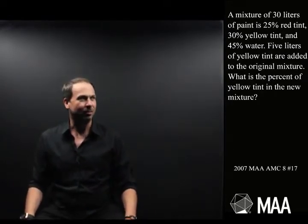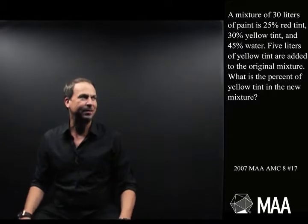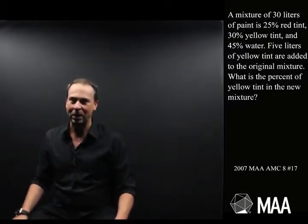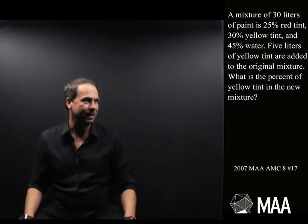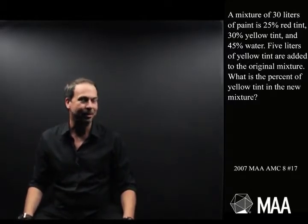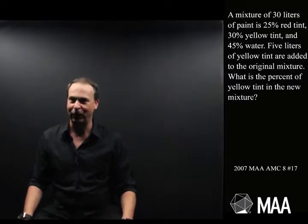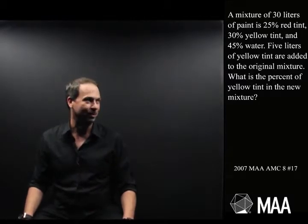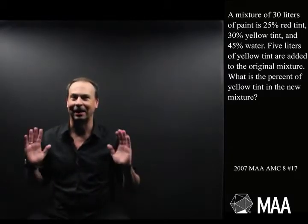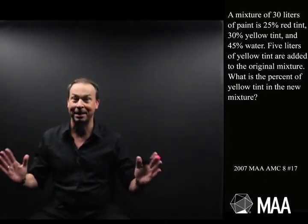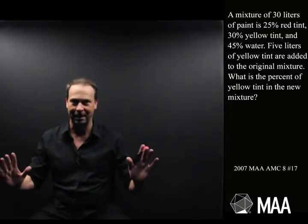A mixture of 30 litres of paint is 25% red tint, 30% yellow tint, and 45% water. Clearly this is a question about percentages.